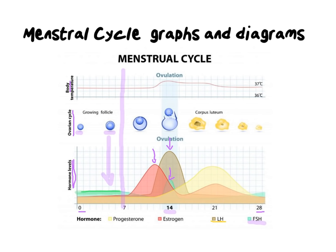Once ovulation has happened, you'll notice the follicle starts to disintegrate and becomes the structure called the corpus luteum. The hormone associated with that — looking down at the graph — is progesterone, because this structure is making progesterone. So, how do we interpret these pictures and know what to look for? That's what we're going to cover now.